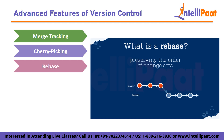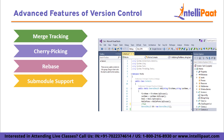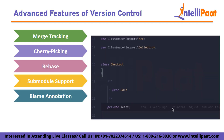Rebase: rebase is a powerful feature that allows you to modify the history of branches. It allows you to move or integrate commits from one branch to another, making the commit history cleaner and more organized. Rebase can be used to combine commits, reorder them, and apply them on top of the latest changes. Submodule support: submodules enable the inclusion of external repositories within the main repository. They allow you to manage dependencies and incorporate external libraries, making it easier to work with complex projects that have multiple components. Blame annotation: also known as file annotation or annotation view, blame annotation shows who made changes to a file and when, allowing you to view commit details and authorship for each line of code, providing valuable insights into the history and ownership of code segments.